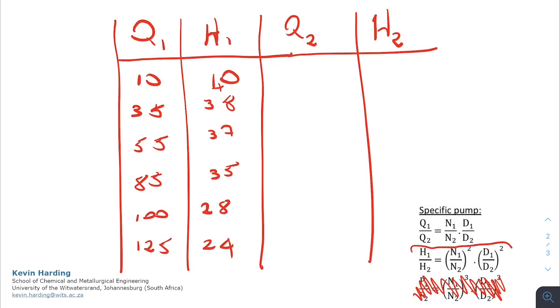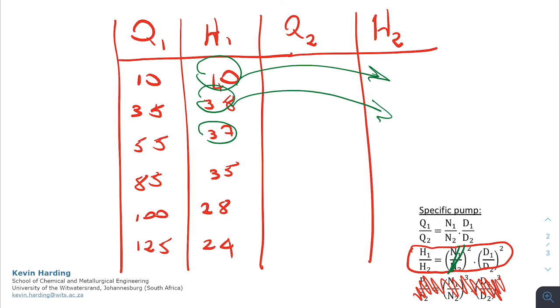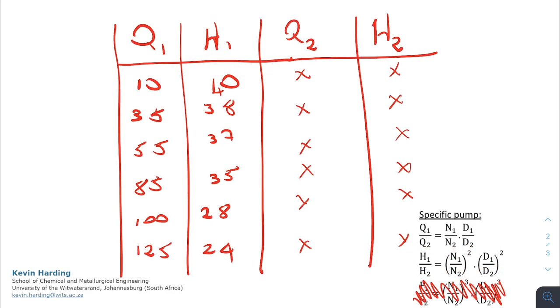In a similar way, we can convert the H values through the H1, H2 equation. So the H1, H2, again the N1, N2 are going to fall away because of the same speed. We will then convert H1s into H2 values. This time we will take D1, D2, and we will take the square of this. Once we've got these Q2 and H2 values from our specific pump equations at the bottom right, we can now go back to our original graph.